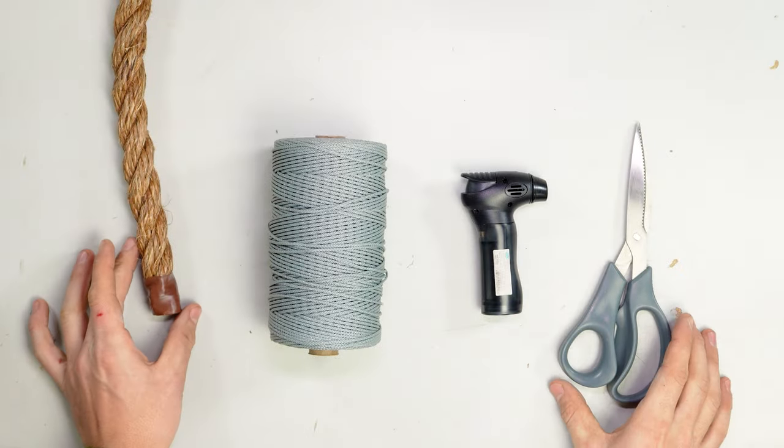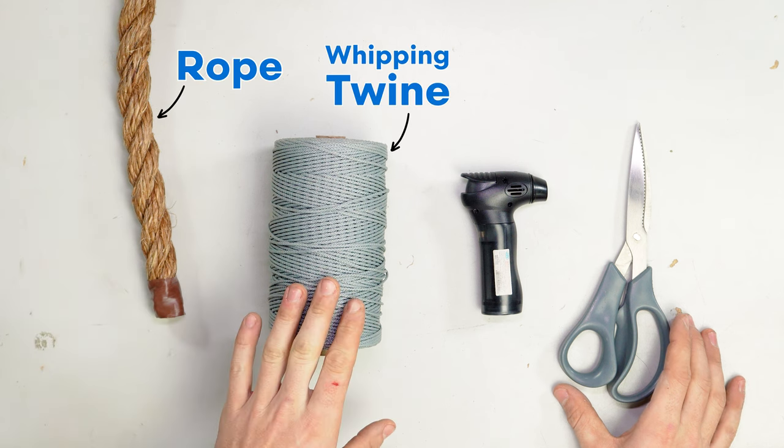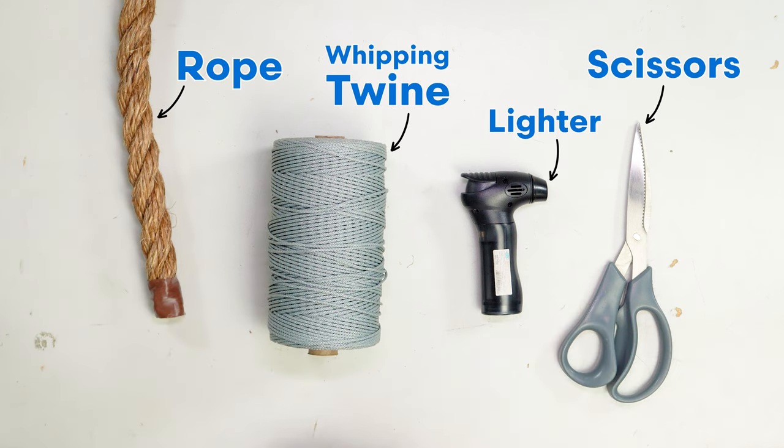So the tools you'll need for a sailmaker's whipping is the rope, whipping twine, a lighter, and some scissors.